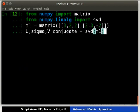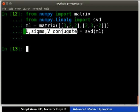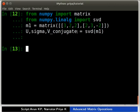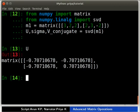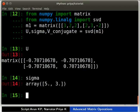Type as shown. SVD returns a tuple of three elements. We have unpacked these values into variable U, sigma and V underscore conjugate. Type U, sigma and V underscore conjugate.